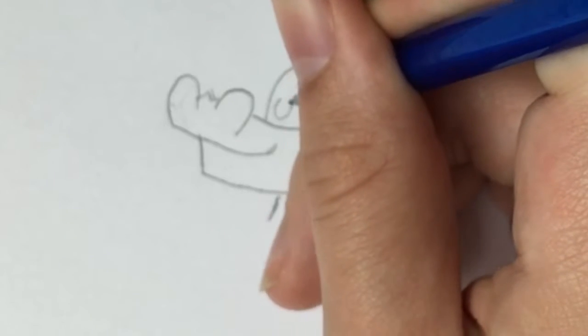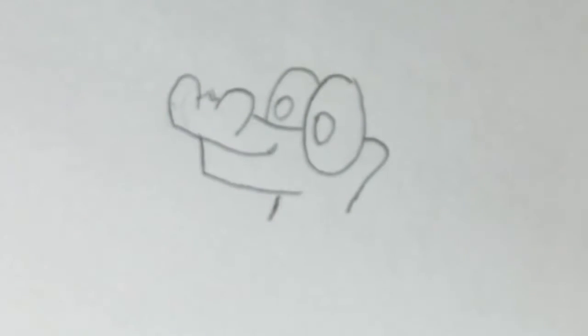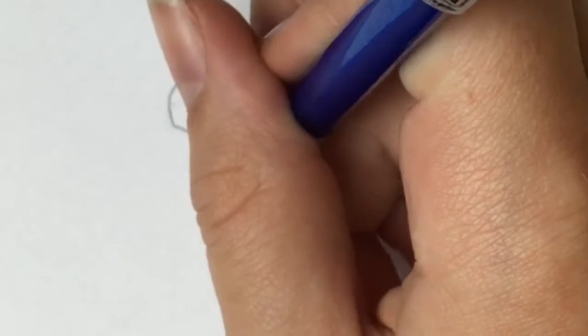Now draw small oval pupils inside the zeros and nostrils. Add a little tongue.